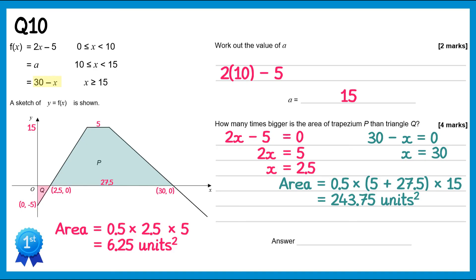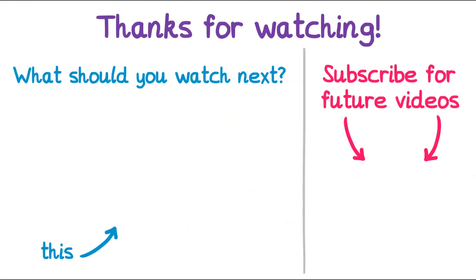The question asks how many times bigger the area of the trapezium is than the triangle. Dividing 243.75 by 6.25 gives the answer 39.